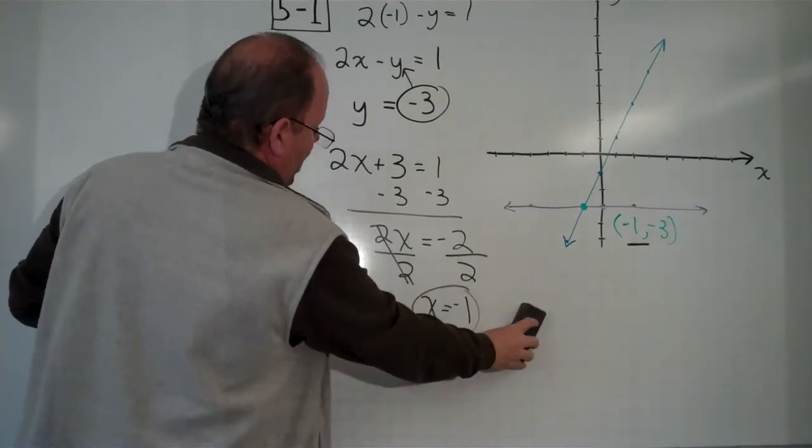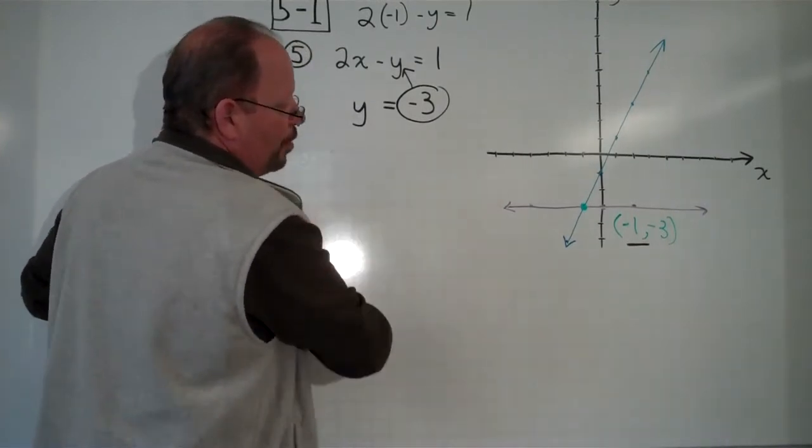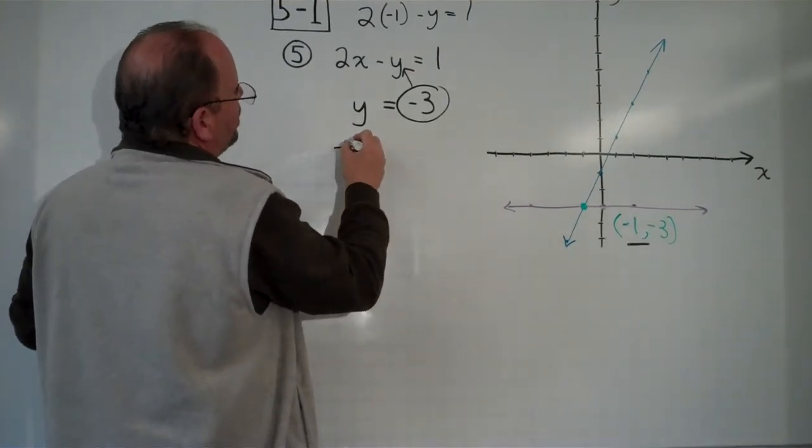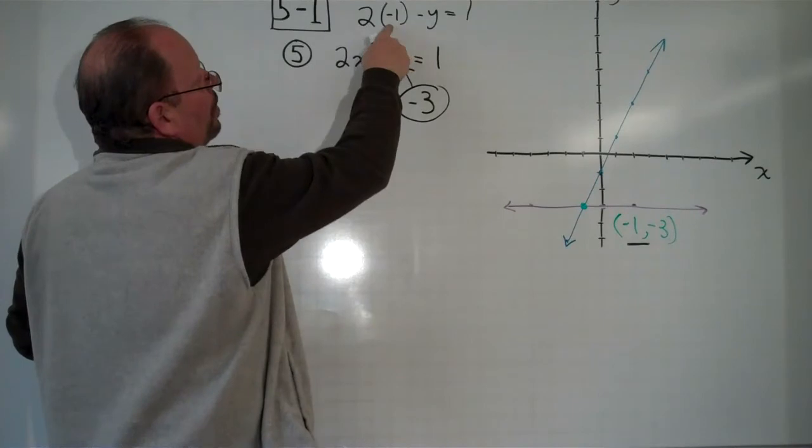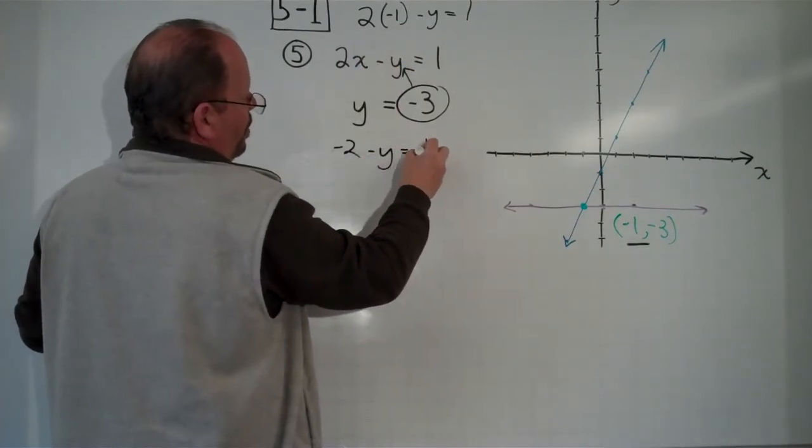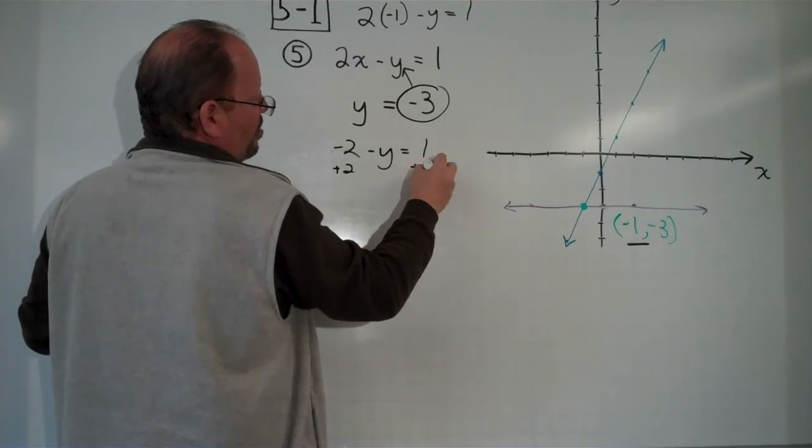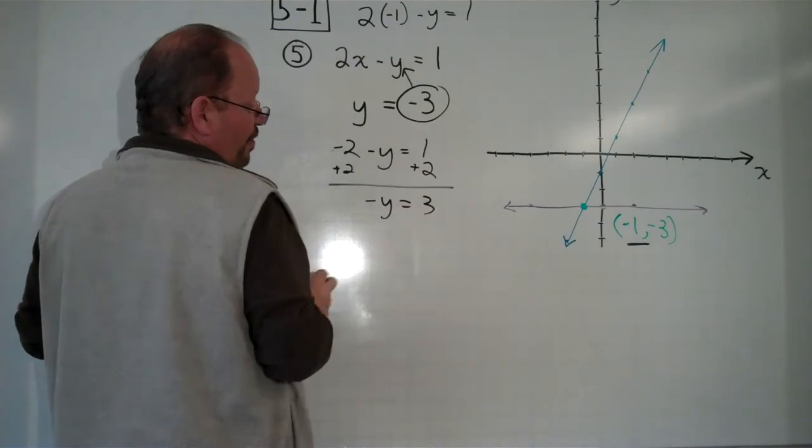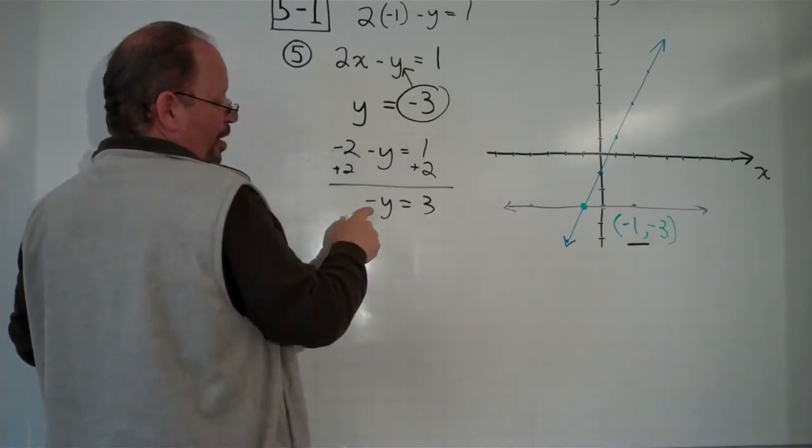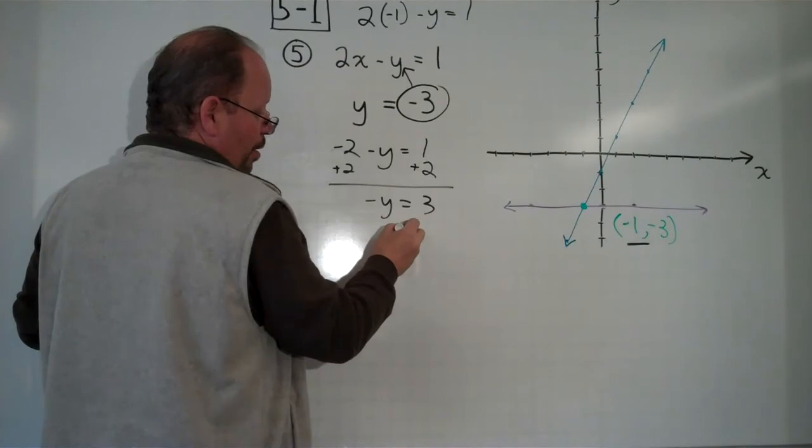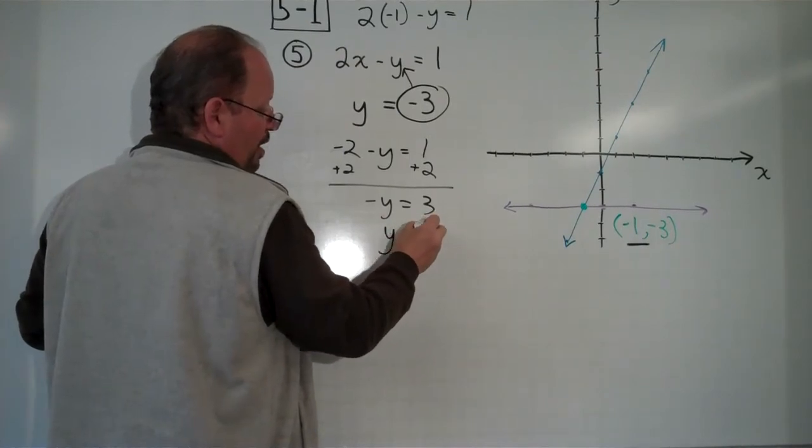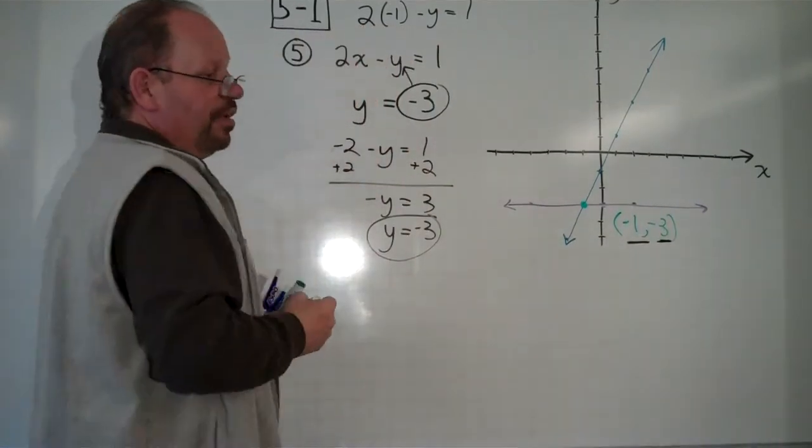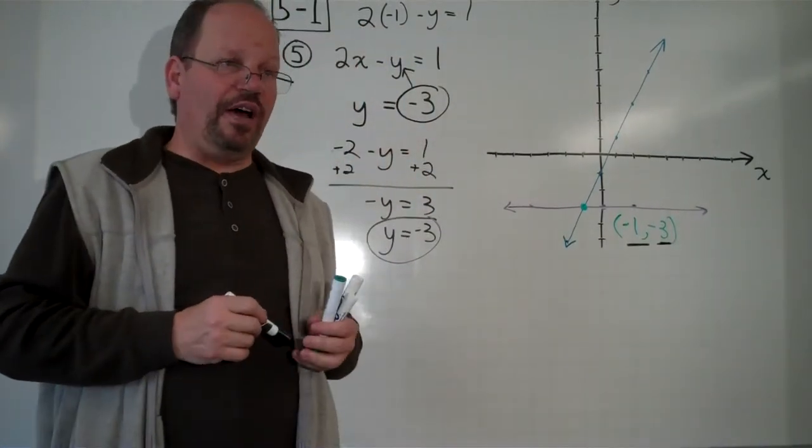So if we were to do that, please know that you have a pause and a rewind if you need to see that again. Negative 2 minus y equals 1. Add 2 to both sides. Negative y equals positive 3. Multiply both sides by negative 1. Positive y equals negative 3. And we find the other part of our solution. So this is the method from 5-2.